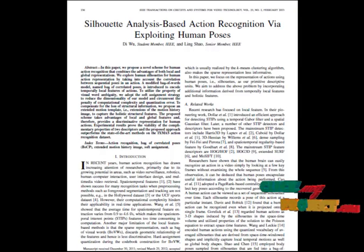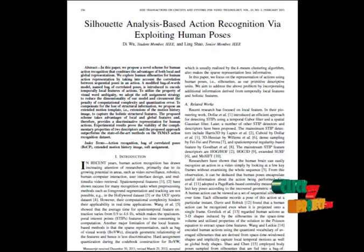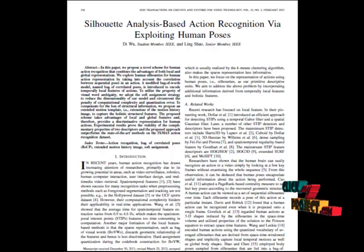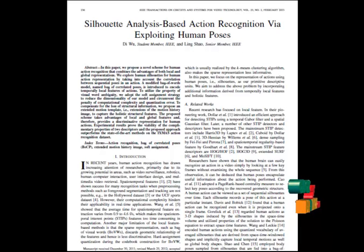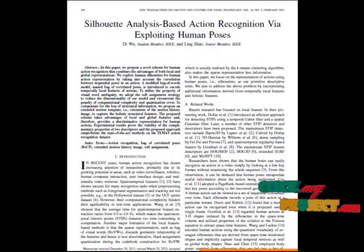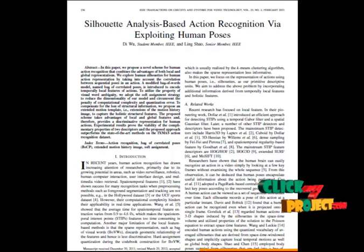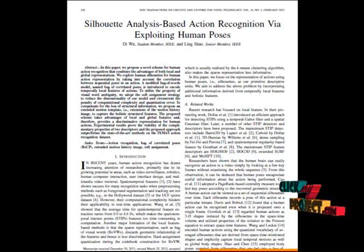Here we propose a method to recognize the action in the silhouette of a human. We extract BOCP — that is Bag of Correlated Poses — and the BOCP feature is extracted in a sequence of steps.